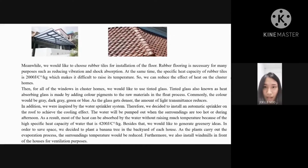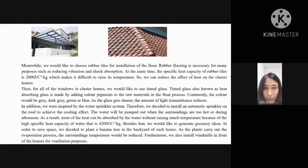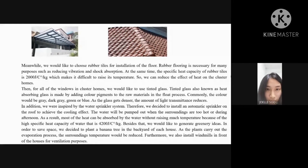Besides that, we would like to incorporate greenery ideas. In order to save space, we decided to plant a banana tree in the backyard of each house. As the plants carry out the evaporation process, the surrounding temperature would be reduced. Furthermore, we also installed windmills in front of the houses for ventilation purposes.